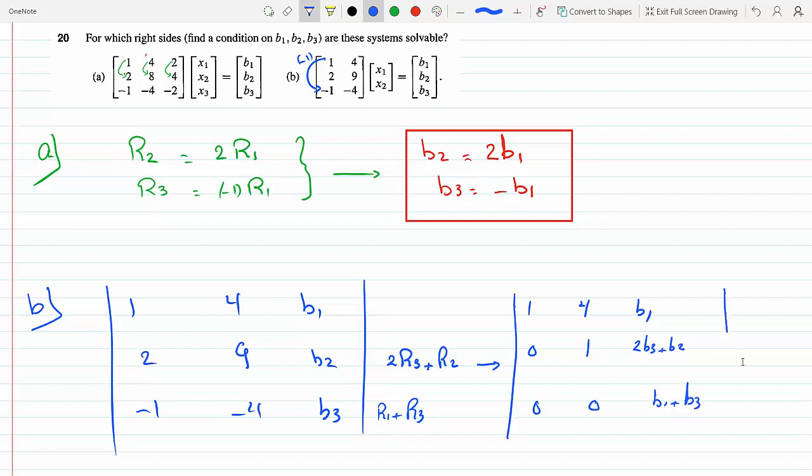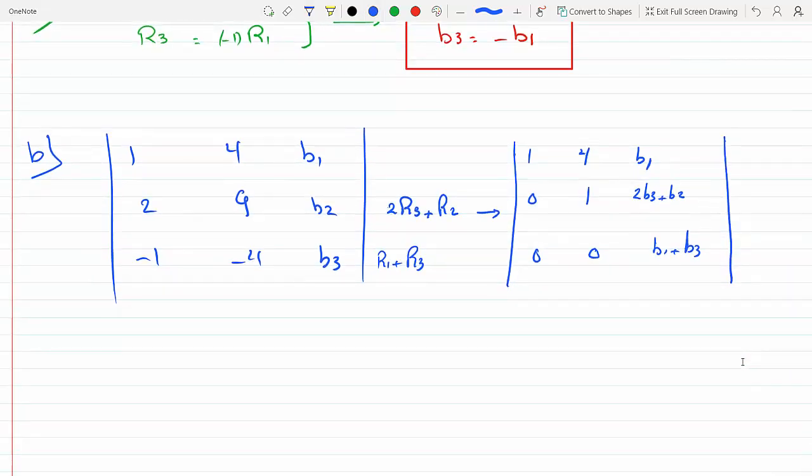4 minus 4 is 0 and b1 plus b3. Okay, nice. So we did it all in one shot. You could see this is a diagonal matrix, it's an upper triangular matrix.